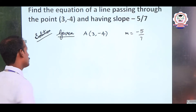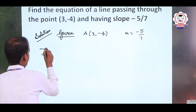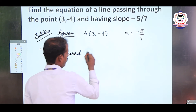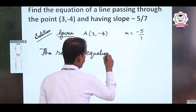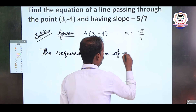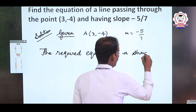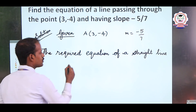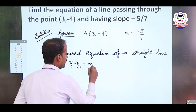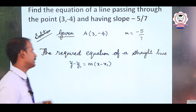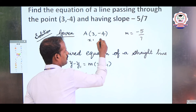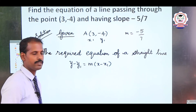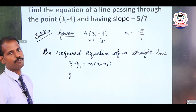The required equation of the straight line is y - y1 = m(x - x1). What is x1? It is 3. What is y1? It is -4. And slope is -5/7. Substituting: y - (-4) = (-5/7)(x - 3), which gives y + 4 = (-5/7)(x - 3).